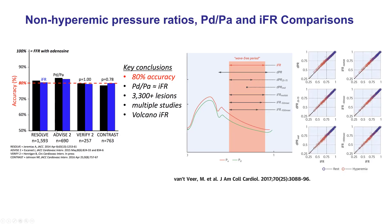This is the example of previous studies showing that 80% correlation essentially of resting indices PDPA with iFR, and there are multiple other indices including the DPR that show very similar correlation with iFR and PDPA.